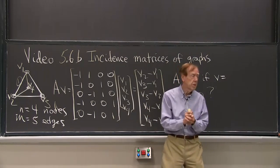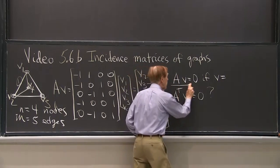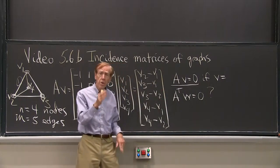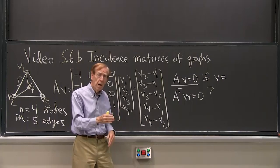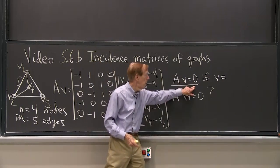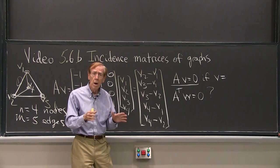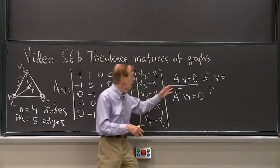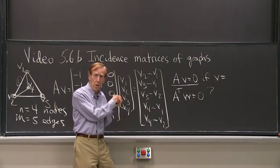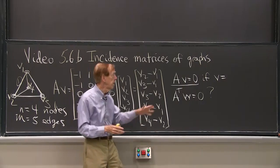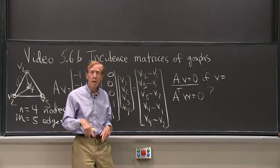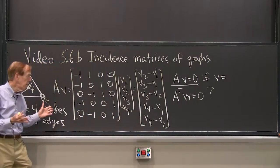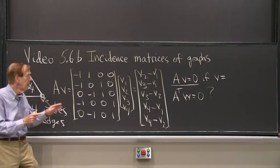And the key questions that I have in mind are, are there solutions to Av equals 0? That says, are there combinations of the columns that give the 0 column? So it's asking, are the columns dependent? If the columns were dependent, then I'll find some solutions. And here I will. If the columns are independent, the only solution I will find will be v equals 0. But those columns are dependent. Now, how can we see that?